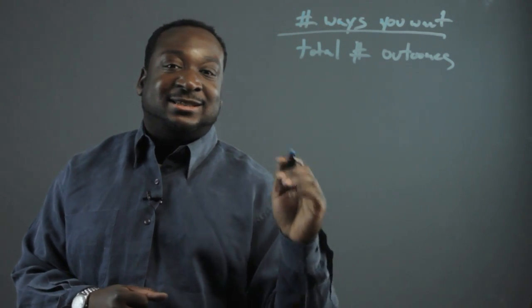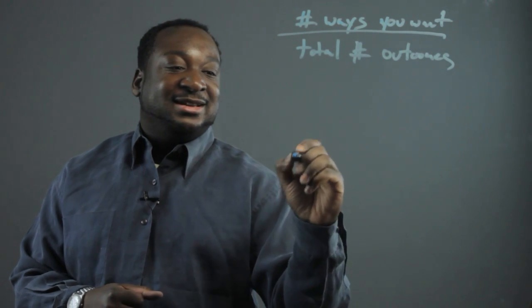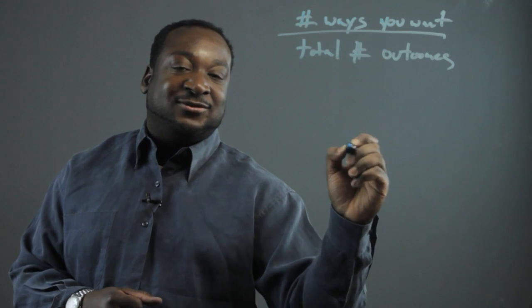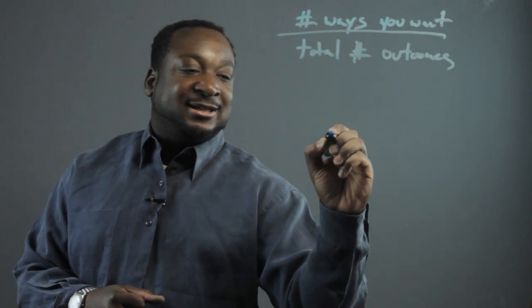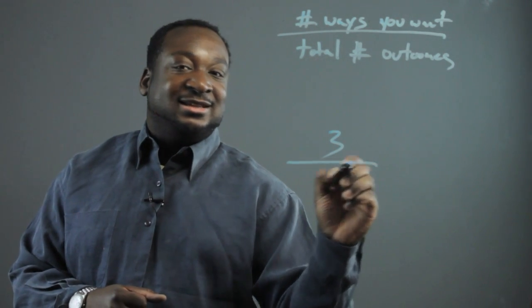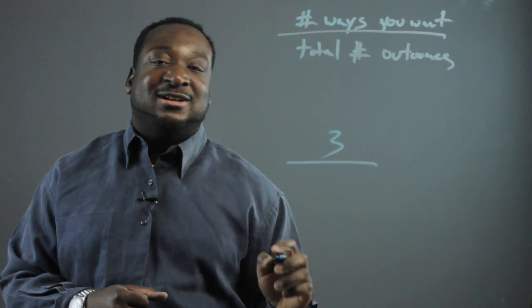There are three different ways an even number could come up, which is a two, four, or six. So that's three divided by the total number of outcomes.